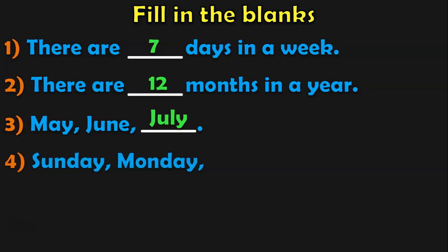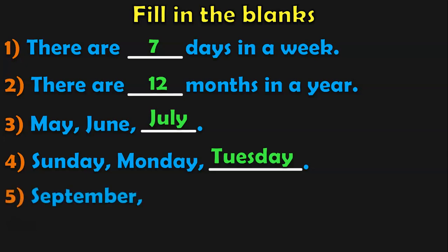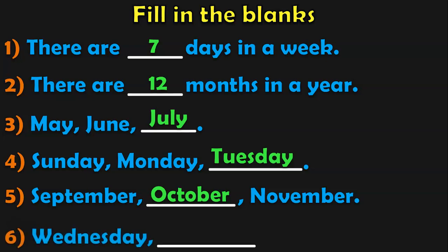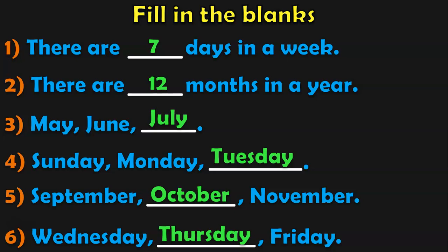Similarly, we have Sunday, Monday, blank — the day which comes after Monday is Tuesday. For September, blank, November — the month which comes between September and November is October. For Wednesday, blank, Friday — the day which comes between Wednesday and Friday is Thursday. You can frame many such interesting questions so that the child becomes thorough in the order of the days and months.